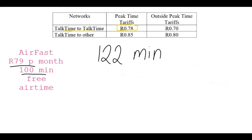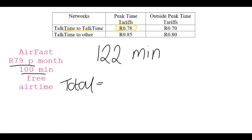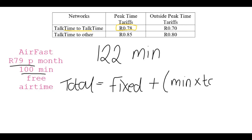How much would this now cost me — the total amount I would pay this month? The formula is: fixed monthly amount plus the number of chargeable minutes times the tariff rate. The fixed monthly amount is 79 rand, plus the minutes times the specific tariff I fall under.